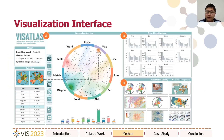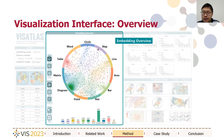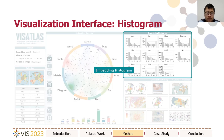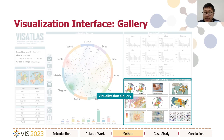Based on our method, we also developed a visualization interface for exploration of these collections comprising three major views: the embedding overview, the embedding histograms, and the visualization galleries. The embedding overview displays the main results of our image embedding and contextual projection of a visualization collection. The embedding histogram displays the prediction scores of different types across the whole dataset. The visualization gallery displays similar visualization images to the current data point in focus or user-uploaded images.